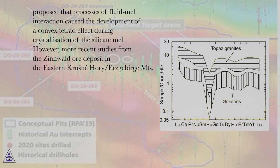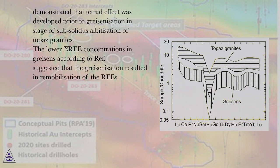However, more recent studies from the Zinnwald ore deposit in the eastern Krusne hory/Erzgebirge Mts demonstrated that tetrad effect was developed prior to greisenization in stage of subsolidus albitization of topaz granites.